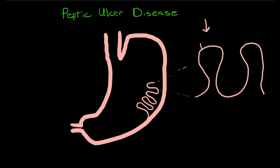On the surface we have a columnar epithelium, and the columnar epithelium is interspersed with what are called foveolar cells. The foveolar cells are actually very similar to the goblet cells in the intestines, and their major role — as you might expect, since they are similar to goblet cells — is to produce mucus that lines the stomach.